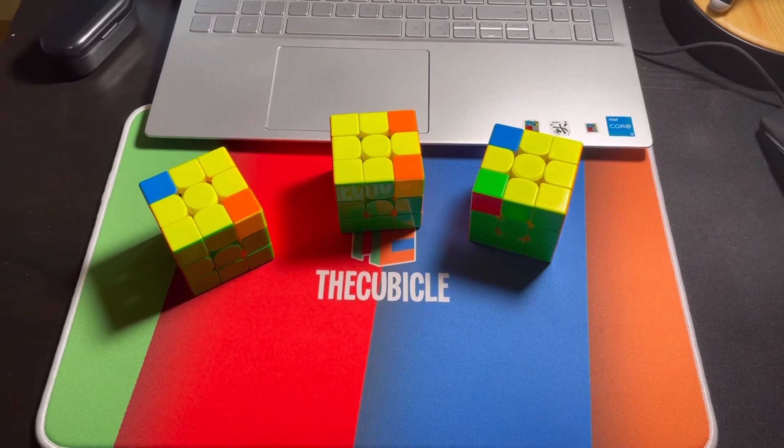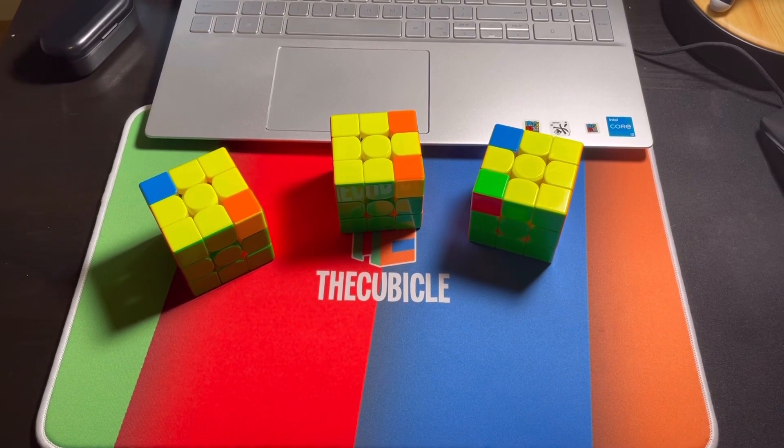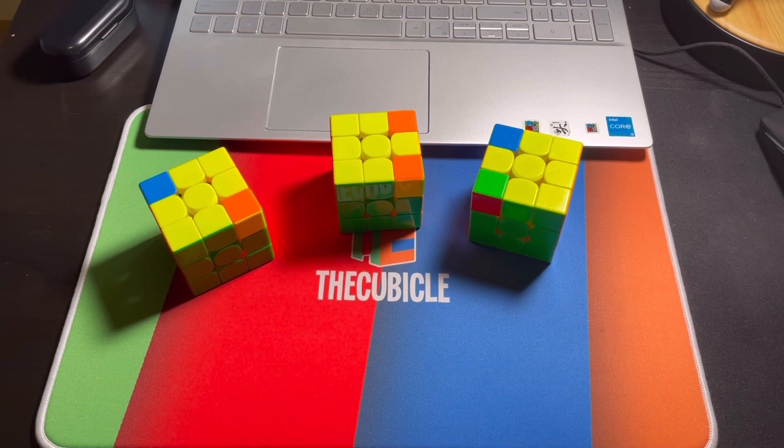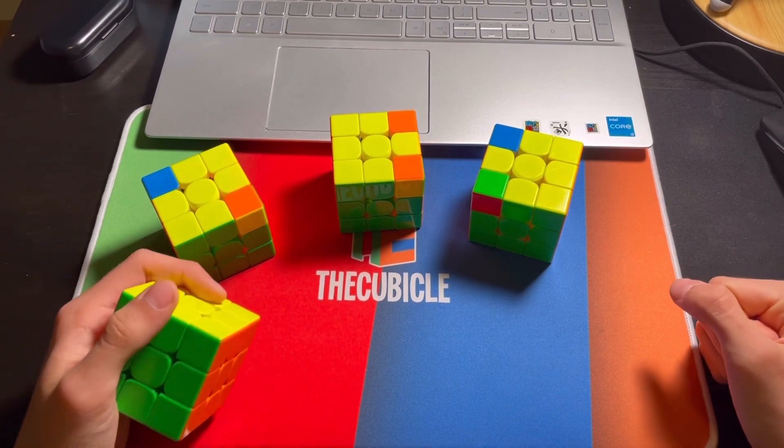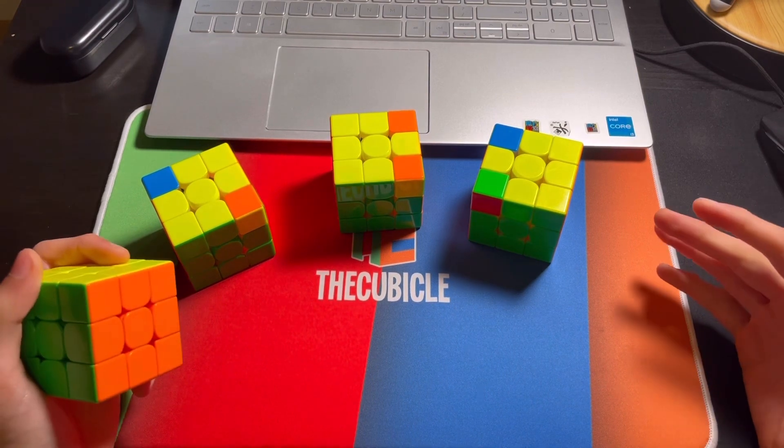Recently somebody asked me to make a video about ZBLL, so here are the easiest ZBLL cases that I know, and they're ones that I actually use. I barely know any, but these ones are so easy that I think anyone could implement them in their solves, as long as they're proficient with CFOP.